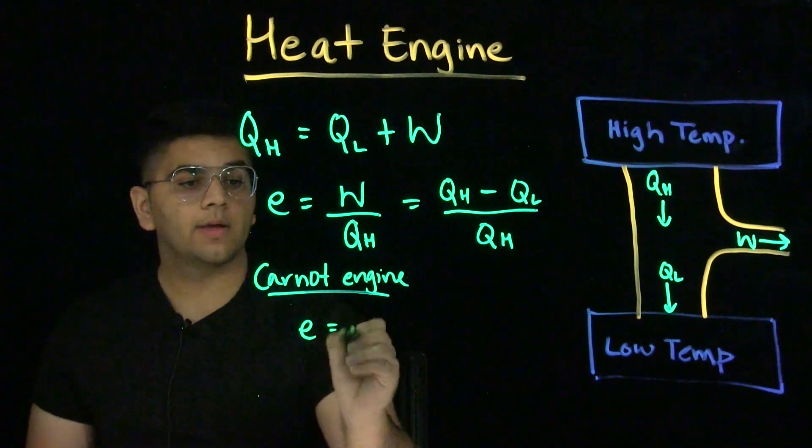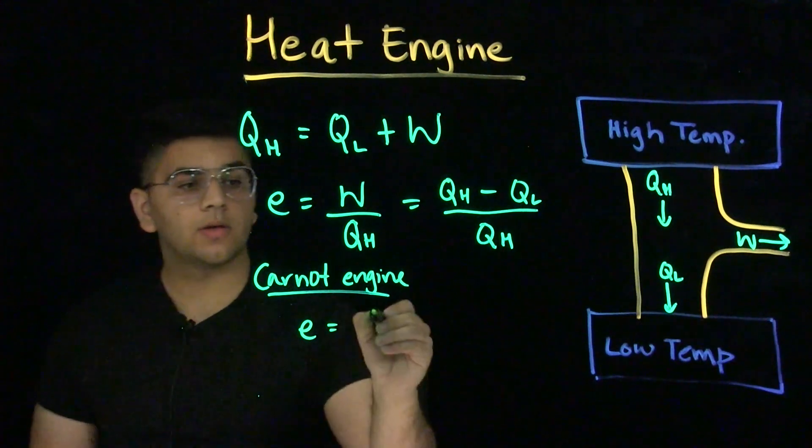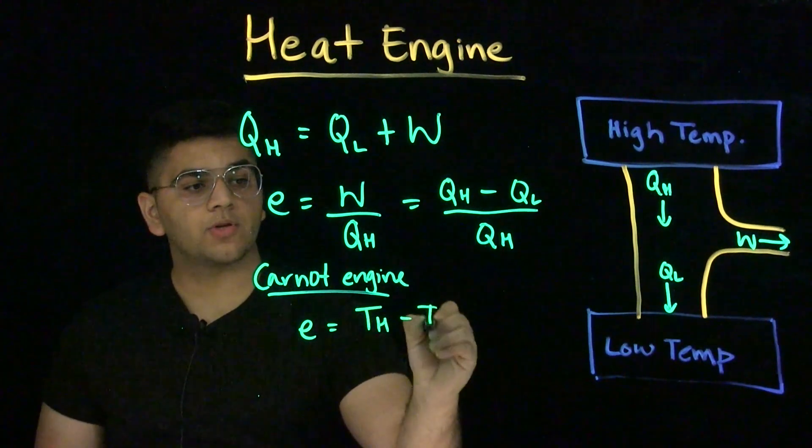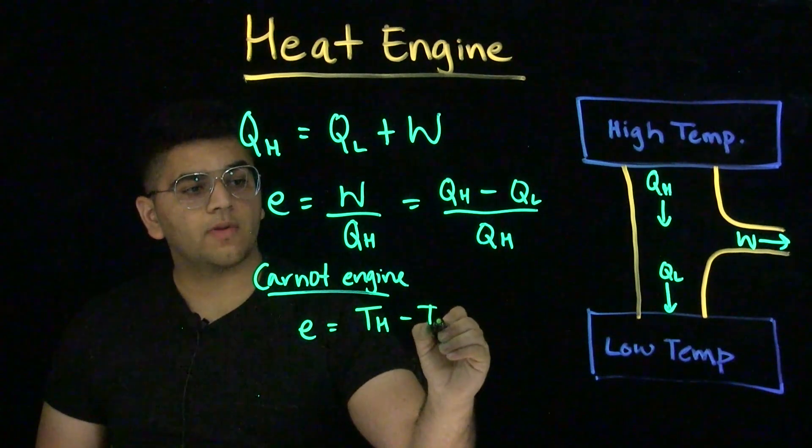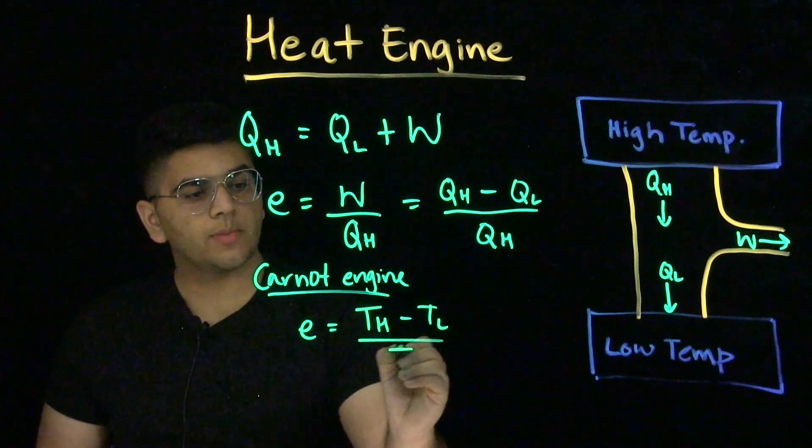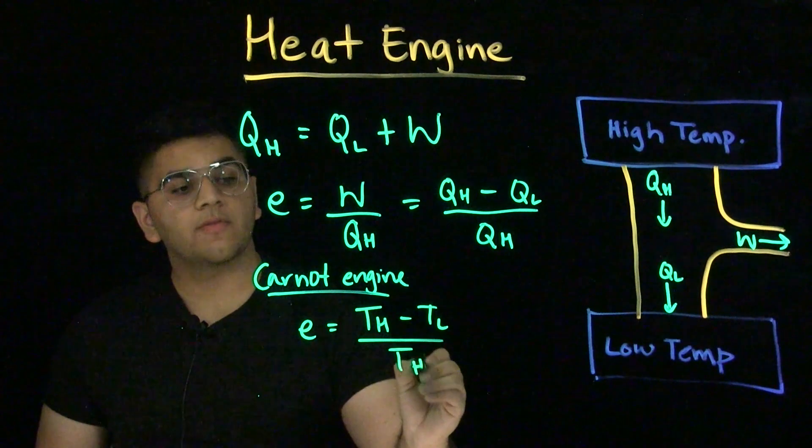We can find that the efficiency of a Carnot engine is the temperature of the high environment, minus the temperature of the lower temperature environment, over the temperature of the higher temperature environment.